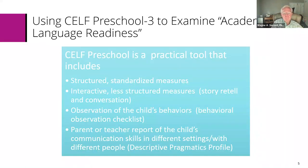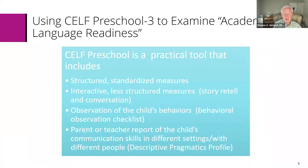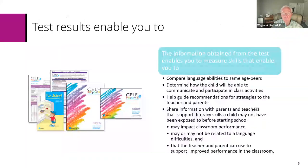SELF Preschool 3 is designed to examine academic language readiness. It is a practical tool that includes structured standardized measures, interactive less-structured measures such as story retell and conversation, observation of the child's behavior through the behavioral observation checklist, and parent or teacher report of the child's communication skills in different settings with different people, done through the descriptive pragmatics profile.